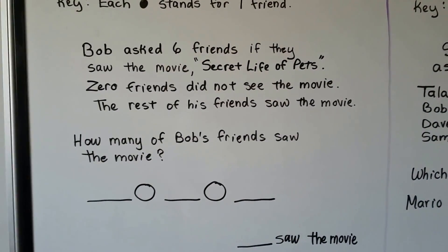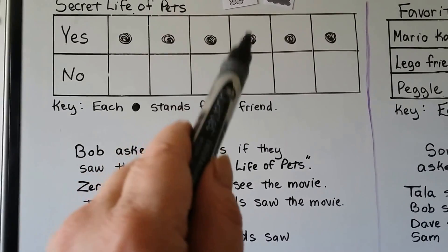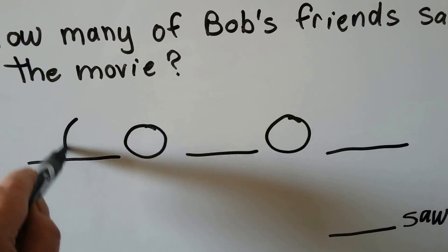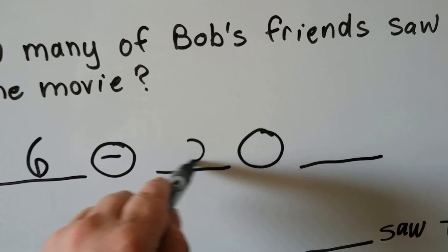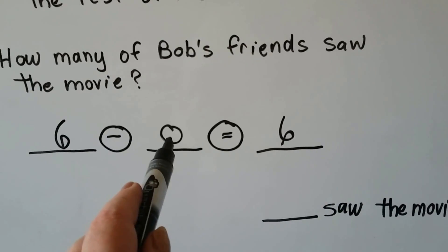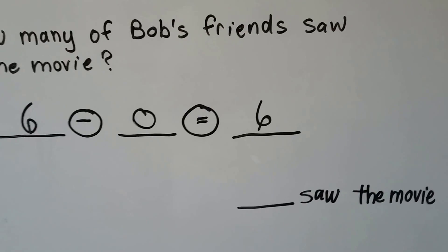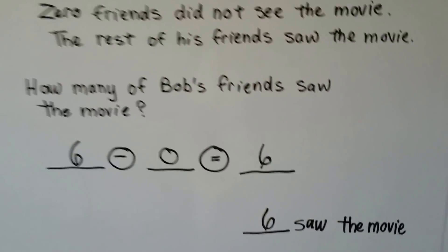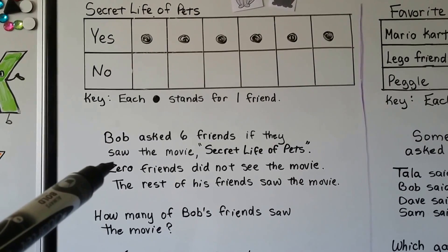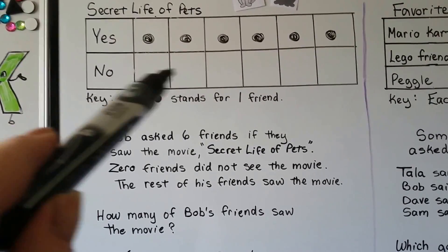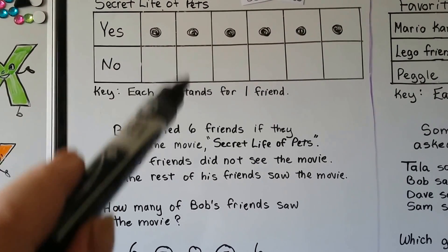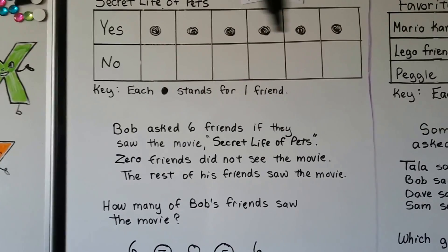So how many of Bob's friends saw the movie? One, two, three, four, five, six — we know it's six. And we can even write a number sentence: six minus zero is equal to six. Six friends did see it, zero friends did not see it, so six friends saw the movie. When you have a question like this, try putting one there — or what if two friends did not see the movie? Then we'd put two dots for no and subtract from six. But in this case they all saw it.